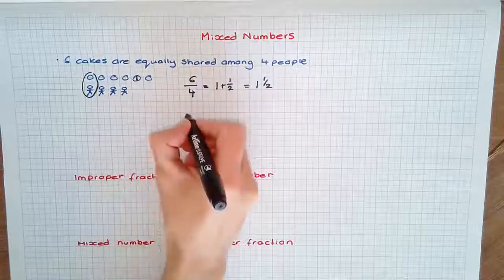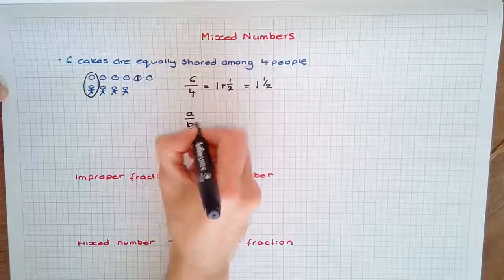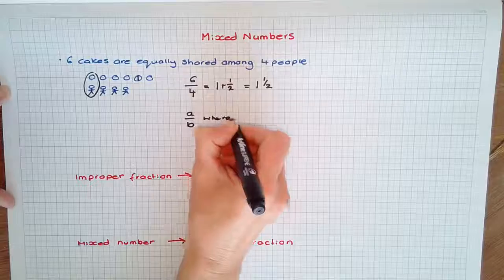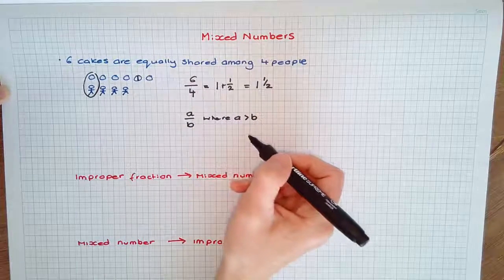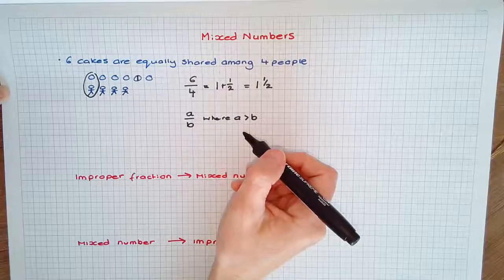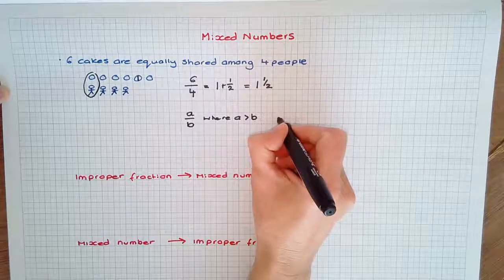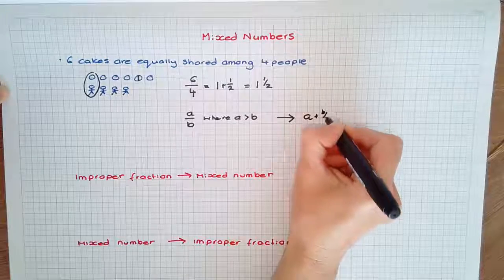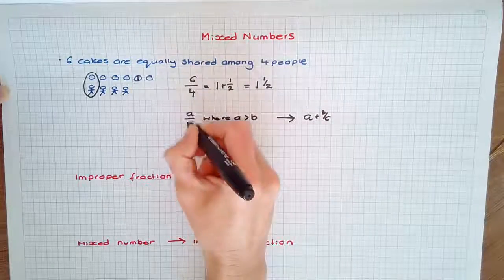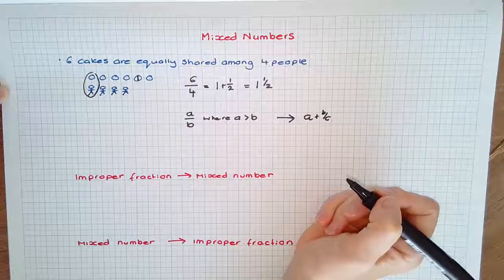Fractions in the form a/b where a is greater than b are called improper fractions and can be expressed as mixed numbers in the form a plus b/c, where a and b are different numbers than that indicated.